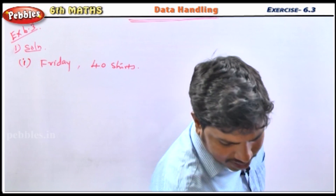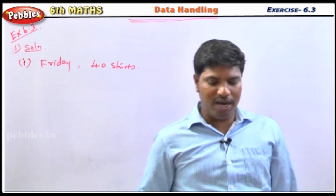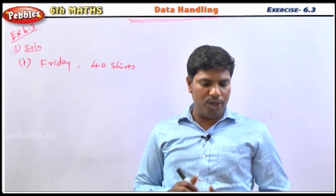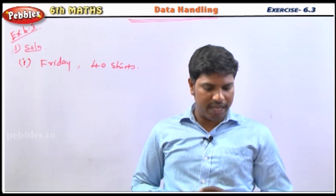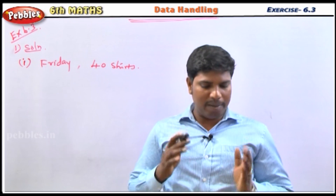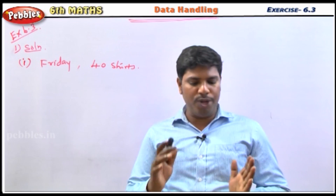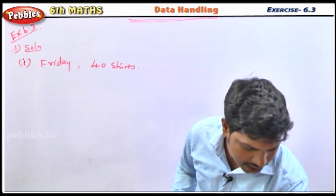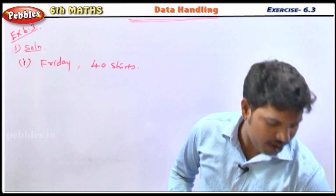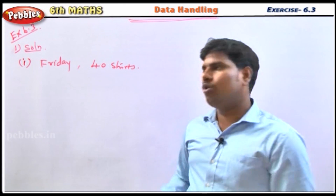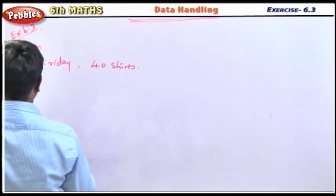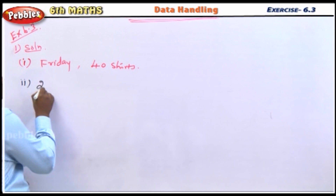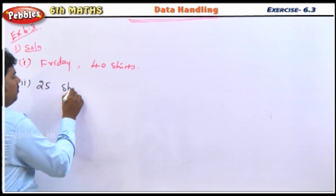The second question: what is the number of shirts produced on Tuesday? The number of shirts produced on Tuesday is 25 shirts.